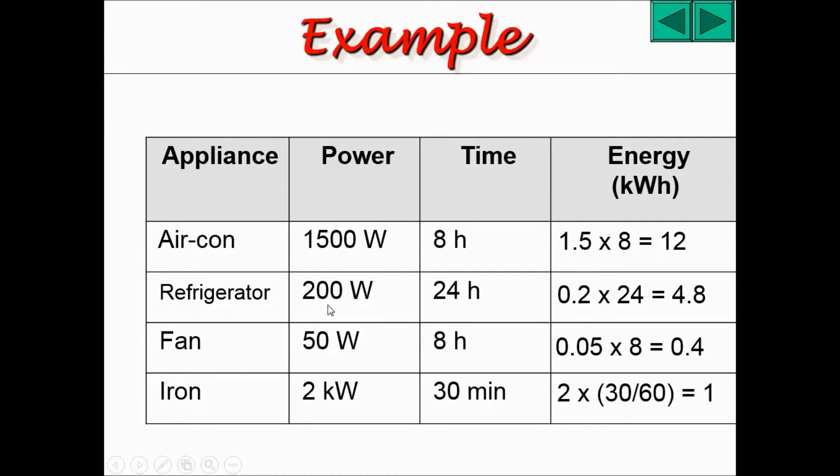The refrigerator takes 200 watts. Therefore, you need to convert it to 0.2 kilowatts. Times 24 will get you 4.8 kilowatt hours of energy.